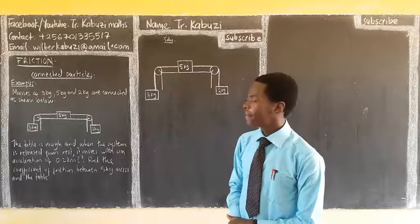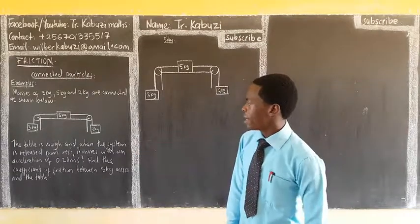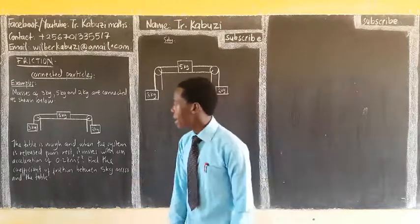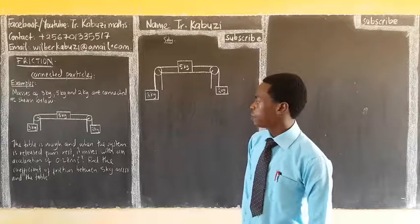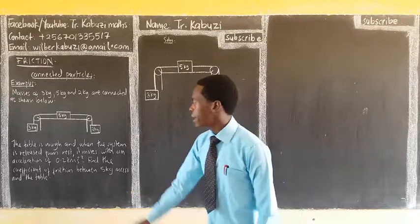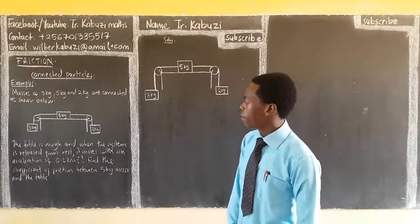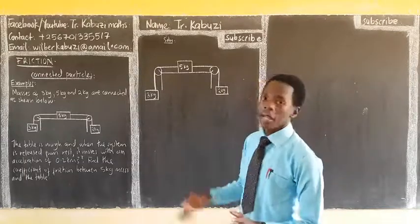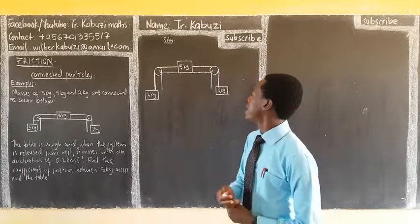So here they are even sketching for you. The table is rough and when the system is released from rest, it moves with an acceleration of 0.28 m per second squared. Find the coefficient of friction between the five kilogram mass and the table. Because they say the coefficient of friction is always between two surfaces. That's why they are asking us this and the table.